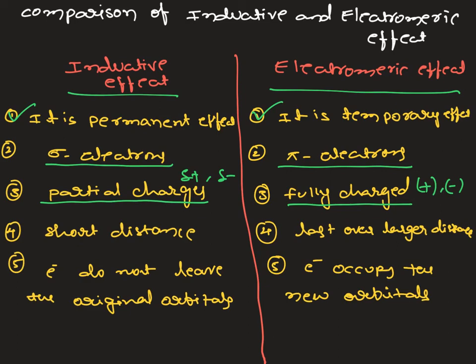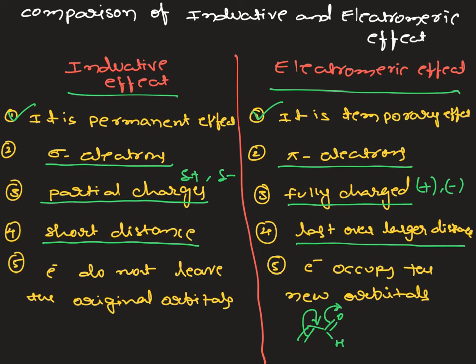The magnitude of inductive effect is present only up to a short distance — more than the second carbon onwards, the inductive effect is mostly negligible. But electromeric effect lasts over a long range distance. If an unsaturated compound is present, in a conjugated system, the electromeric effect extends over a larger distance, whereas inductive effect is seen only up to C1 or C2 carbon at maximum.